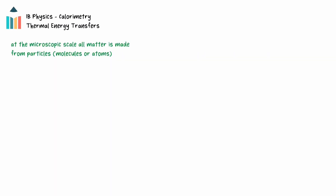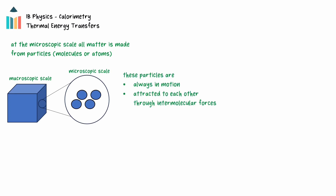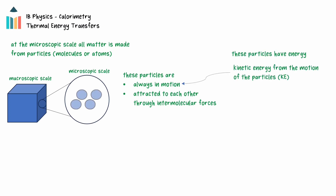The kinetic theory states that on a microscopic scale, all matter is made up of particles. These can either be molecules or atoms, depending on the substance. These particles are always in motion and are attracted to each other through intermolecular forces. Because the particles have mass and are in motion, they have kinetic energy. And because there is an attractive force acting between the particles, they have potential energy, which increases as the particles are moved further apart.